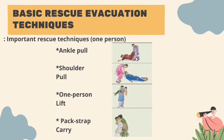The ankle pull is the fastest method for moving a victim a short distance over a smooth surface, but this is not a preferred method of patient movement. The shoulder pull is preferred to the ankle pull as it supports the head of the victim; the negative is that it requires the rescuer to bend over at the waist while pulling. The one person lift only works with a child or a very light person. The pack strap carry is better for longer distances when injuries make other carries unsafe.